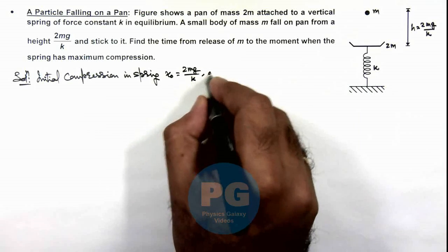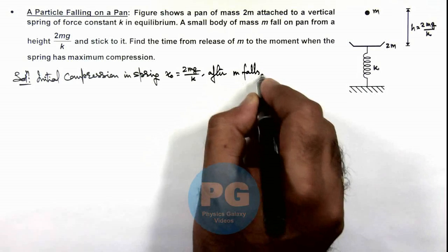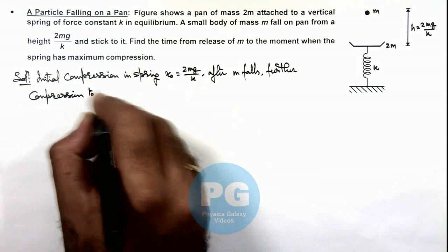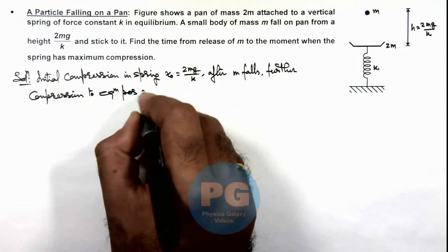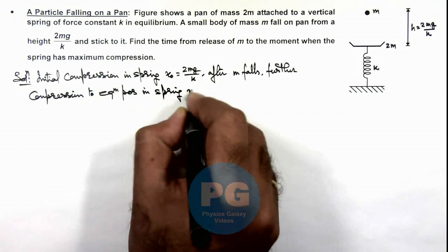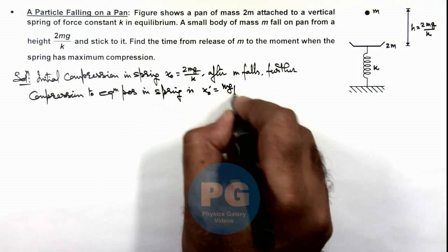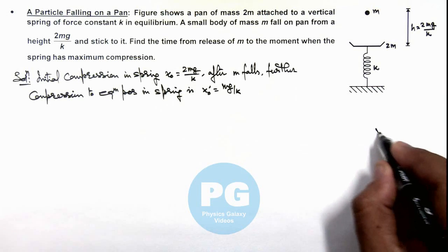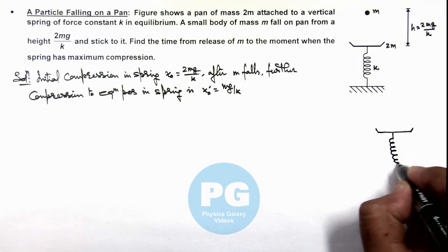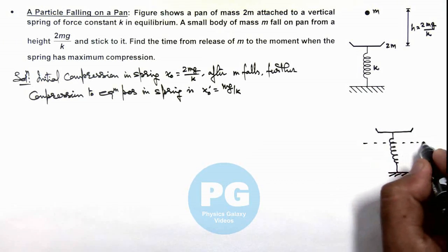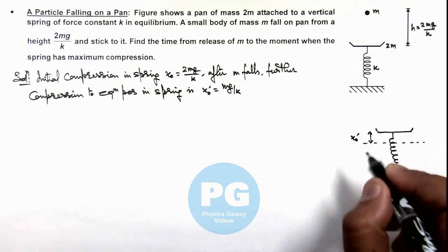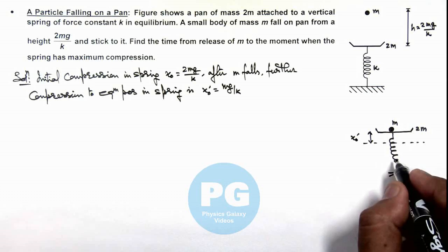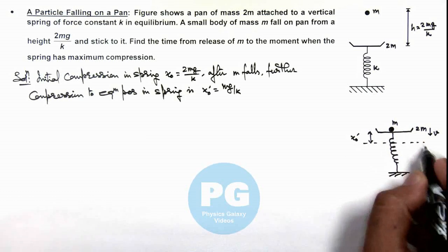After m falls, the further compression to the new equilibrium position in the spring is x₀' = mg/k, which is the additional compression due to the weight of mass m. We can redraw the situation when the ball falls onto the pan. The new equilibrium position is at a distance x₀' from the previous position. The total mass is m + 2m = 3m, going down, and we calculate the speed of the combined mass using conservation of momentum.